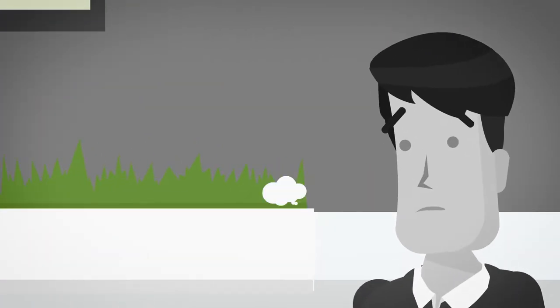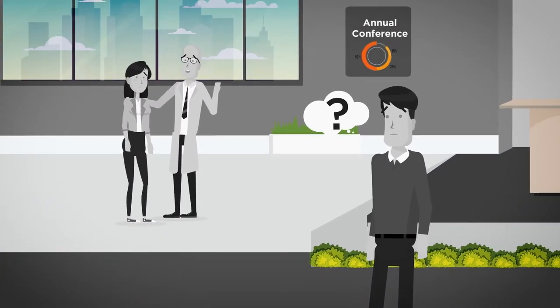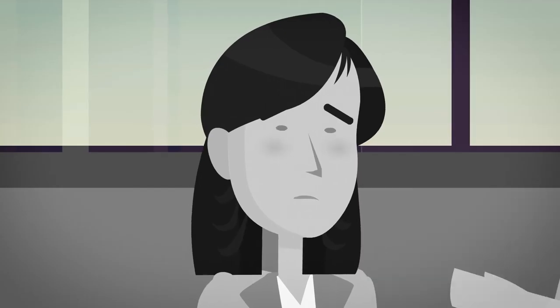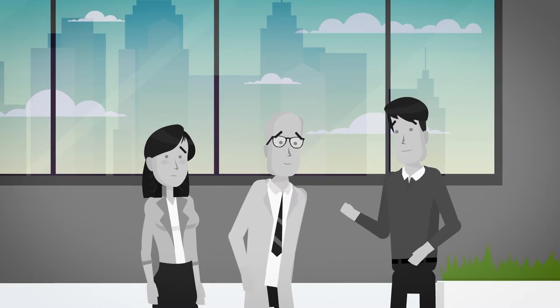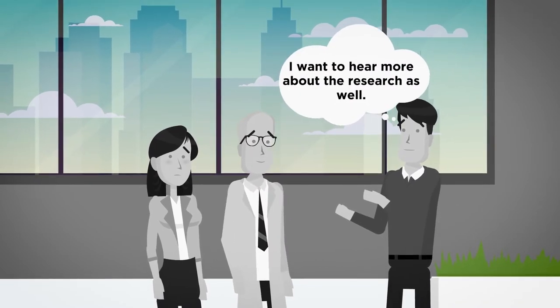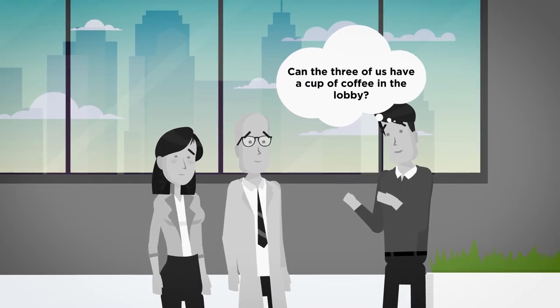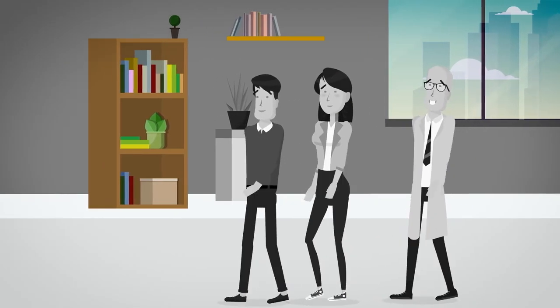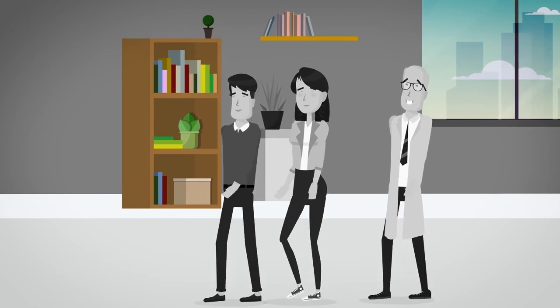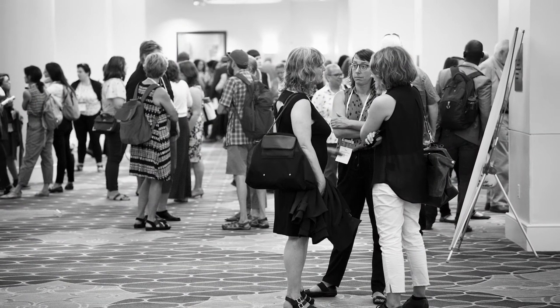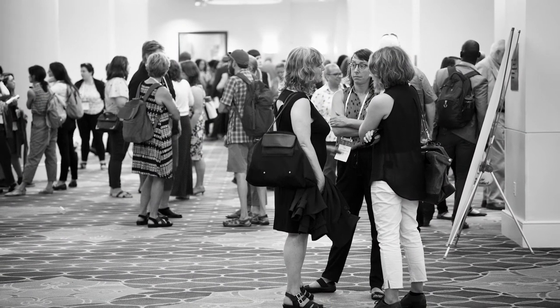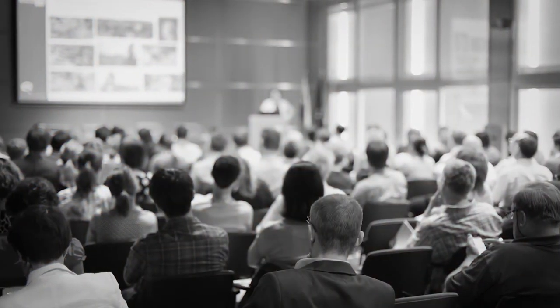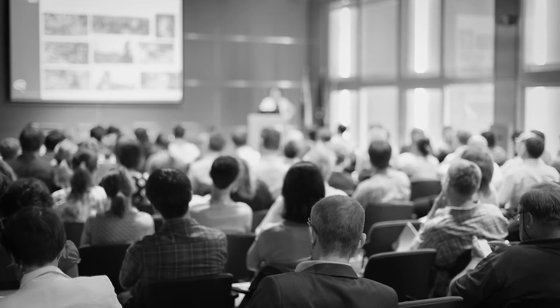So what can you do? As a bystander, you could address the target directly and offer an alternate, safer context for the conversation. You could say something like, 'I want to hear more about the research as well. Can the three of us have a cup of coffee in the lobby?' If your sense is that the student would like help removing herself from the situation entirely, you could also offer her such an out — for example, you could remind the student that she is late to meet someone across the street. Both of these approaches offer a rescue to the student and hopefully send a subtle message to the professor that you do not think his behavior is appropriate.